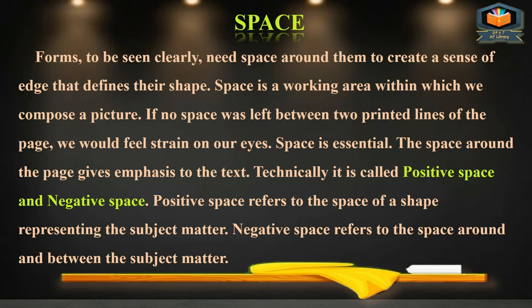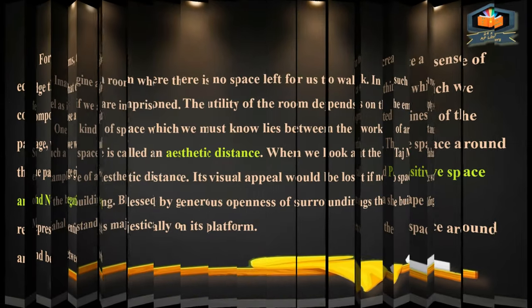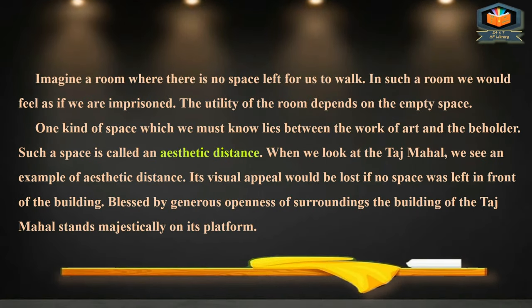Technically, two types of space are positive space and negative space. Positive space is where we represent the subject matter; negative space is the empty space in and around the subject matter image. Imagine a room where there is no space left for us to walk — in such a room we would feel as if we are imprisoned. The utility of a room depends on the empty space.